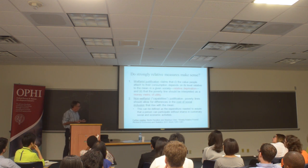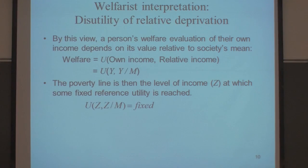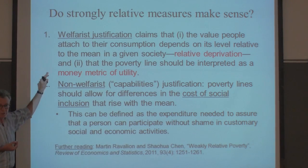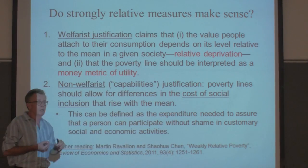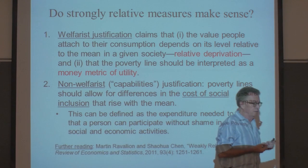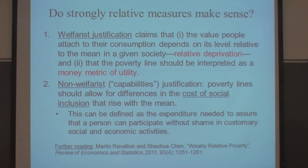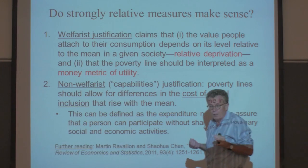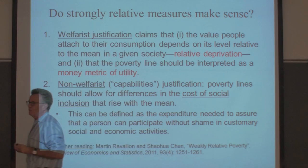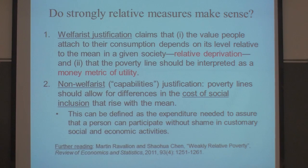Although the entire literature is dominated by these two arguments, I'm going to argue that neither of them is actually correct. Where there are both welfareist and non-welfareist arguments — which are valid in themselves — they do not imply strongly relative poverty lines. It's a mistake that's been made, and we're going to explain why.